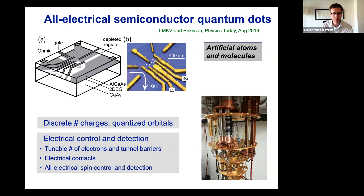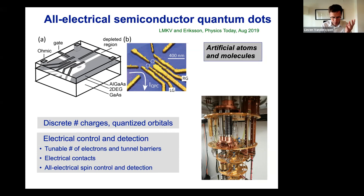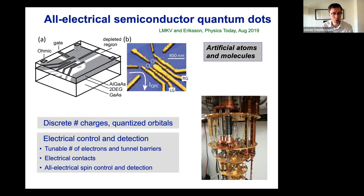In our case, the quantum dots are defined electrostatically with surface gates created by electron beam lithography, with all the flexibility in defining the patterns that lithography allows. These are used to shape a potential landscape in a two-dimensional electron gas, for instance at the interface of the gallium arsenide and aluminum gallium arsenide heterostructure. With this approach, it's routine to isolate individual charges in each of these local potential minima — quantum dots — and to control the hopping, the tunnel coupling between them.